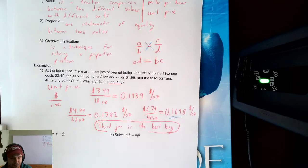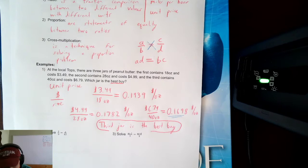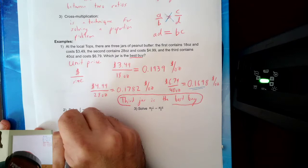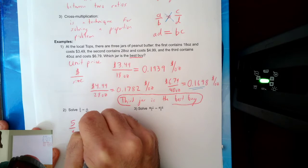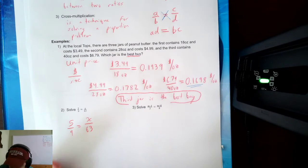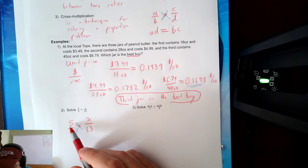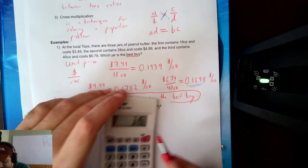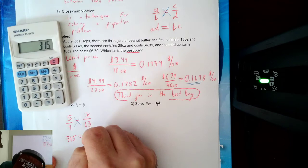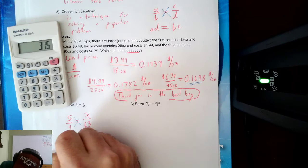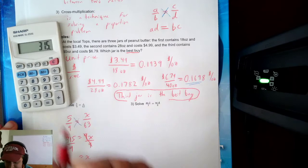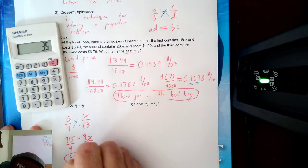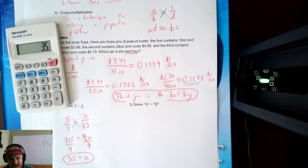Now let's check some cross multiplication. We have 5 ninths equals x over 63 — fraction equals fraction, so I can cross multiply. I get 5 times 63, which is 315, equals 9 times x, which is 9x. I divide both sides by 9: x equals 315 divided by 9, which is 35. So x equals 35. I cross multiplied to solve that problem.